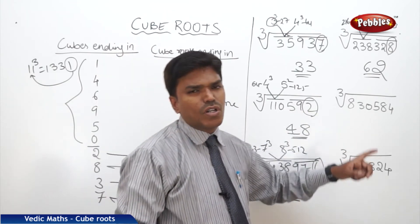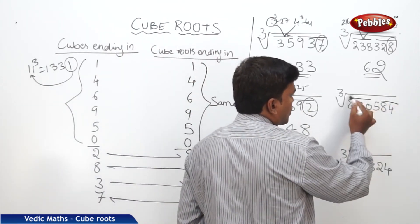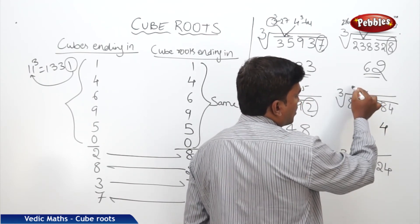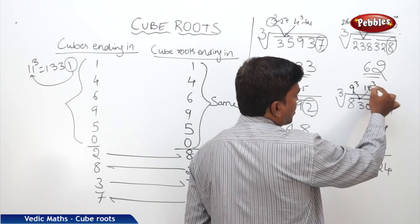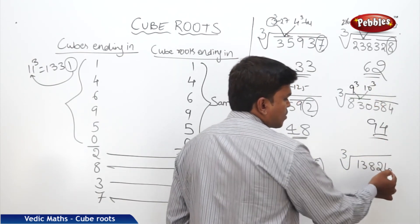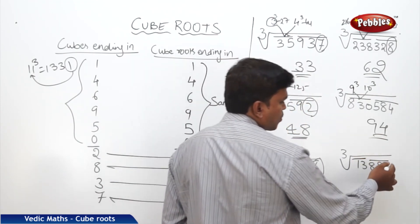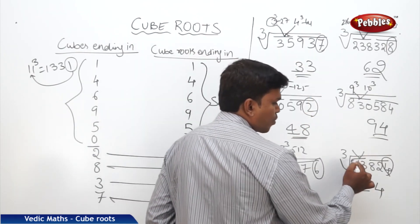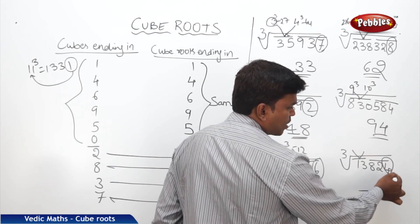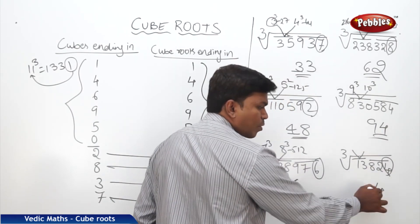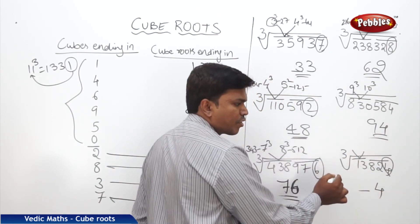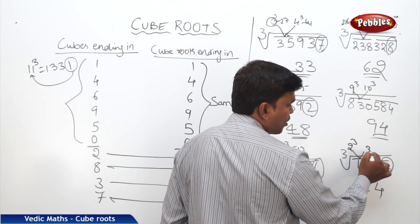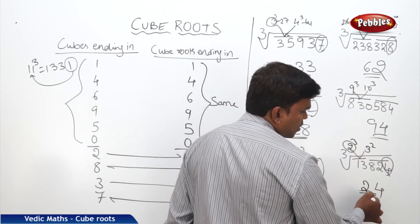Just by looking at the numbers we can say the answer. Partition into 3-3 digits. The cube number ends in 4, so the cube root ends in 4. The second partition is 830, which comes between 9 cubed (729) and 10 cubed (1000); we take the lesser number 9, so the answer is 94. For the number 13284: partition gives 13 and 284. It ends in 4, so cube root ends in 4. 13 comes between 2 cubed (8) and 3 cubed (27); take lesser number 2. Answer is 24.